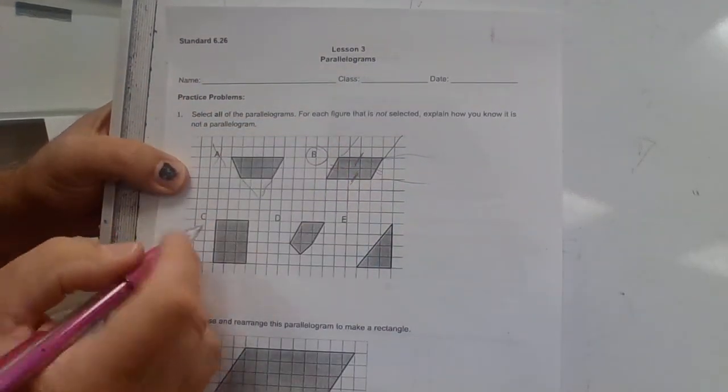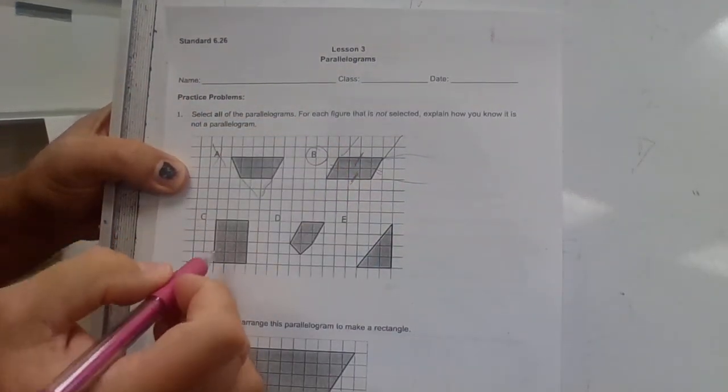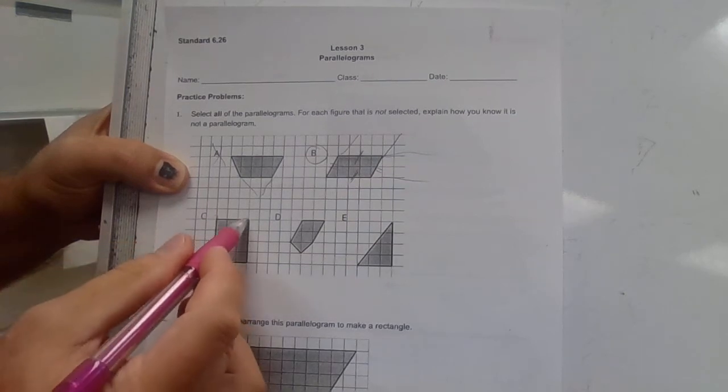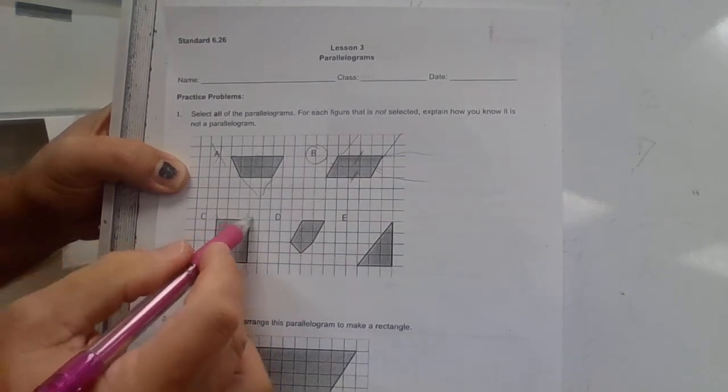C is a rectangle. Opposite sides parallel. Again, here these two are parallel and these two are parallel. Good deal, and it's four-sided.